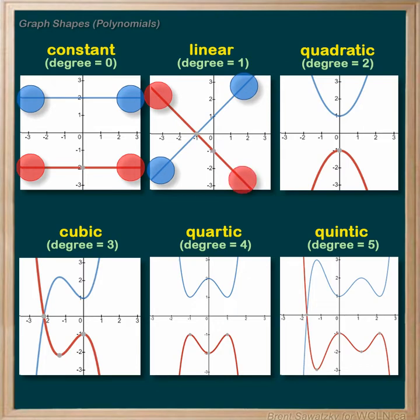The negative of degree one is opposite, starting in the top left and ending in the bottom right. For a degree of two — the quadratic — the positive starts in the top left and ends in the top right.